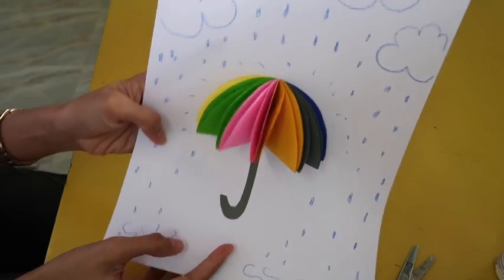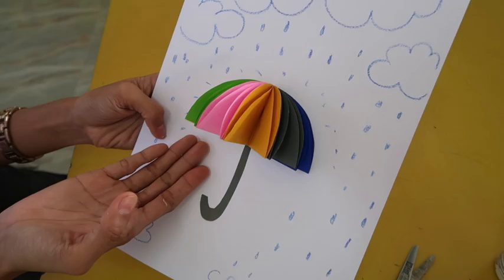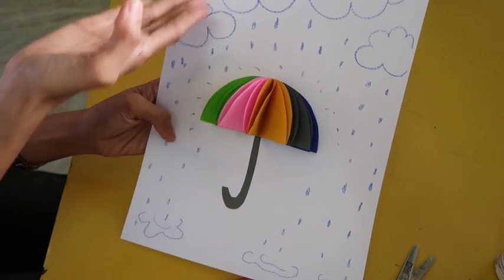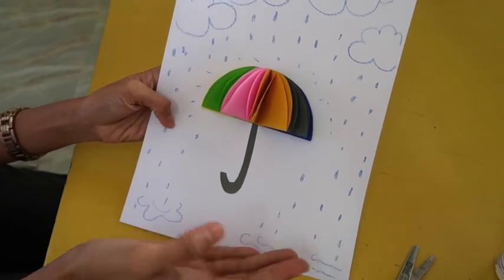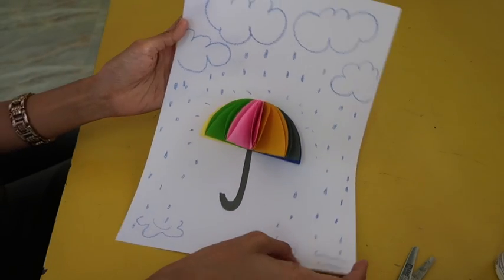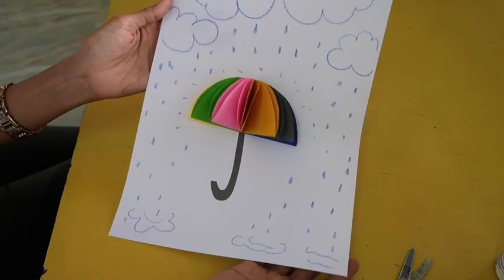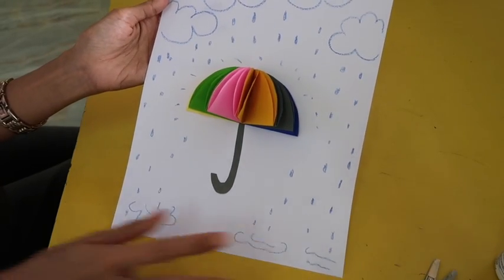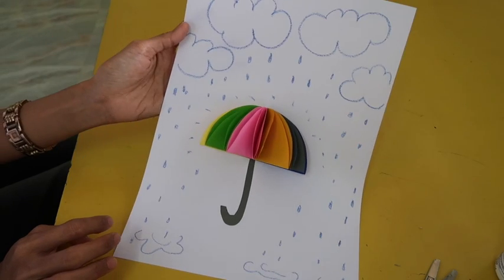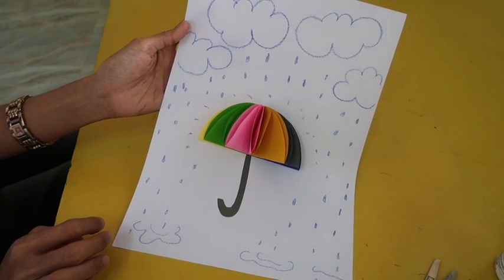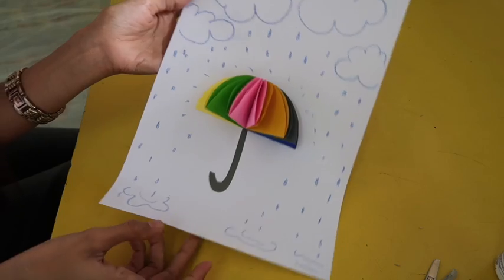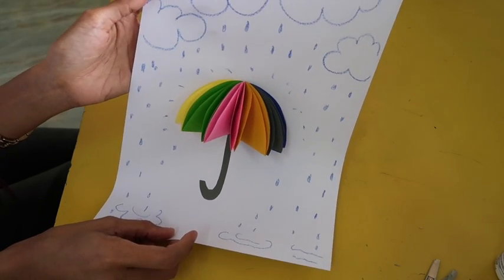And there you go everybody, now we have our umbrella and I also drew some clouds here and some raindrops and this is the final look of our art for today. I hope you try doing this at home and don't forget to take a photo of your art and Teacher Donna will check your work. So that's it for today and I will see you later. Goodbye everyone!